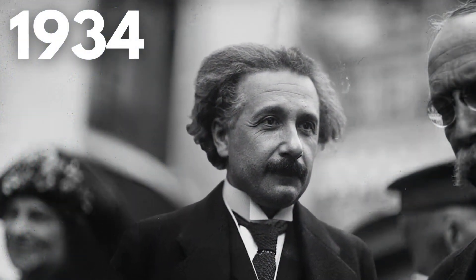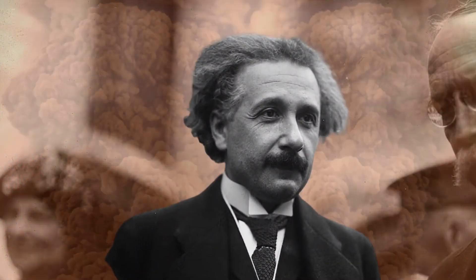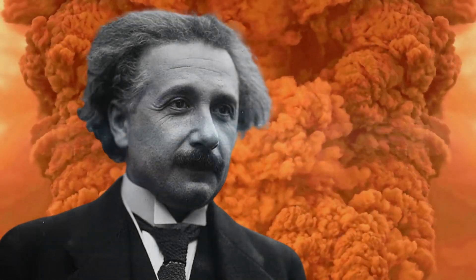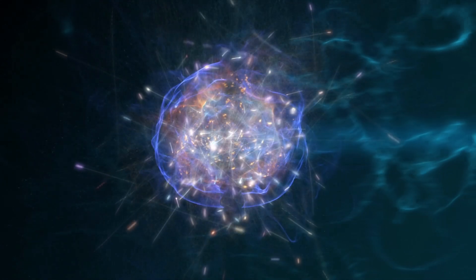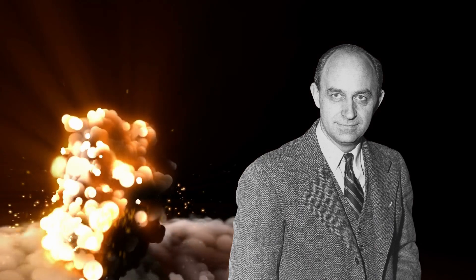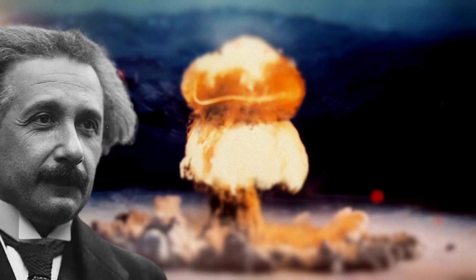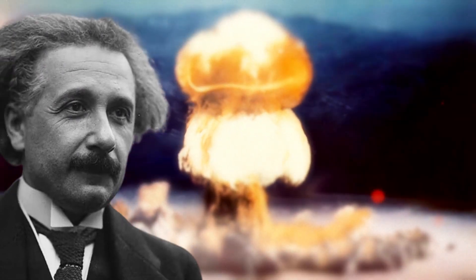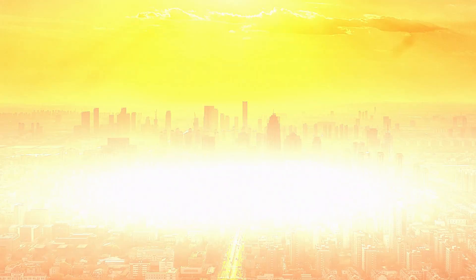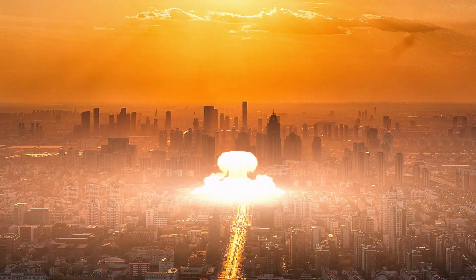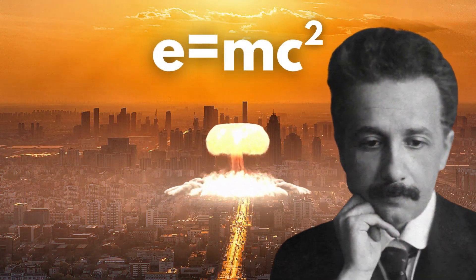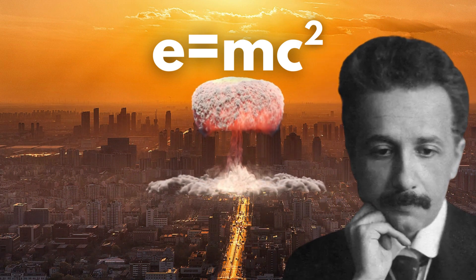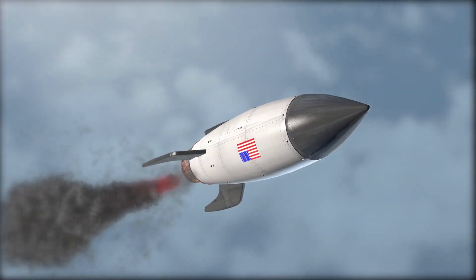In a 1934 interview, Einstein famously stated that obtaining nuclear energy was impossible, as it would require the atom to be shattered at will. However, in 1942, Italian physicist Enrico Fermi and his team achieved the first sustained chain reaction, proving Einstein wrong and leading to the development of nuclear reactors. Despite his doubts, Einstein later joined the Manhattan Project, where his famous equation, E equals MC squared, played a crucial role in the development of nuclear weapons.